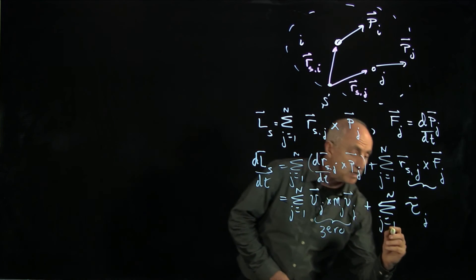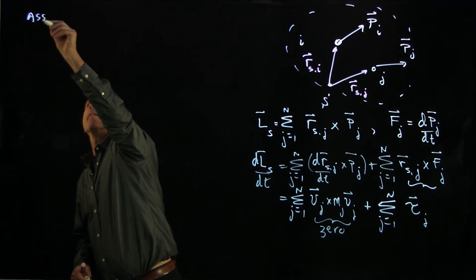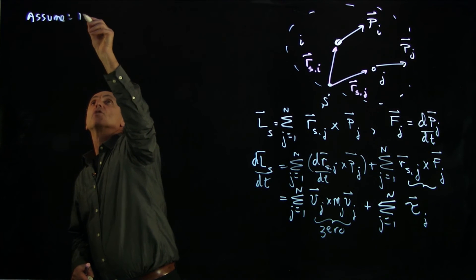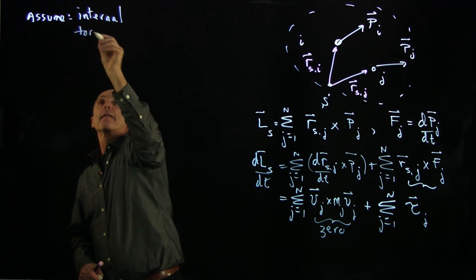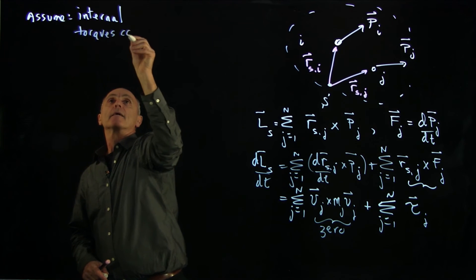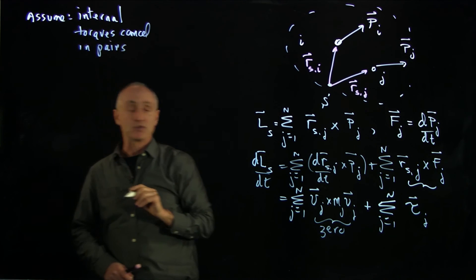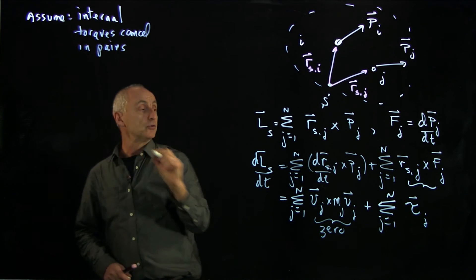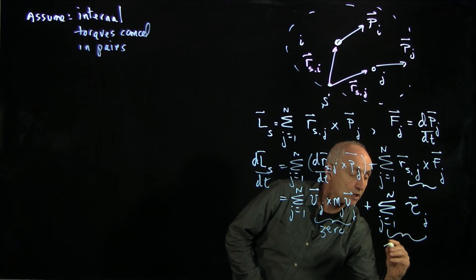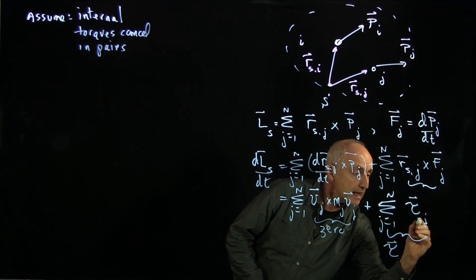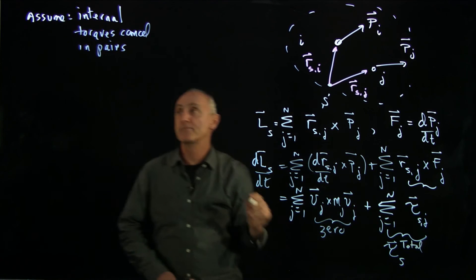And this will only be the external torque. So we've assumed that the internal torques cancel in pairs. And that has to do with an assumption about the direction of the internal forces. And so we can conclude that this is just the total external torque about the point s.